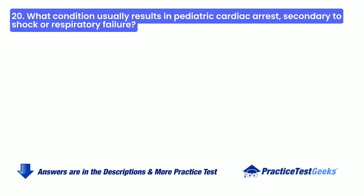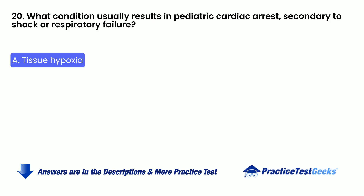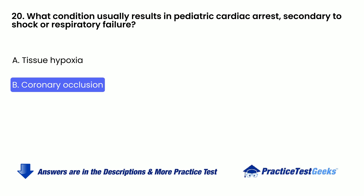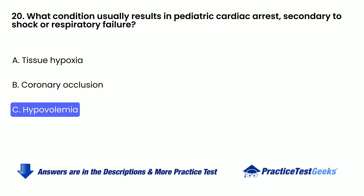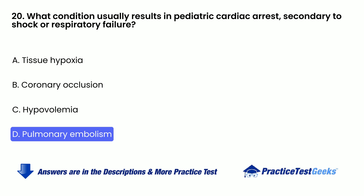What condition usually results in pediatric cardiac arrest, secondary to shock or respiratory failure? A. Tissue hypoxia. B. Coronary occlusion. C. Hypovolemia. D. Pulmonary embolism.